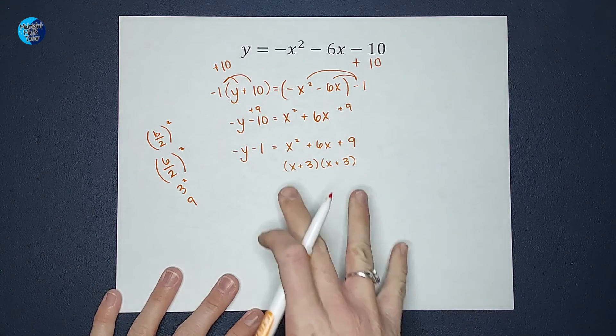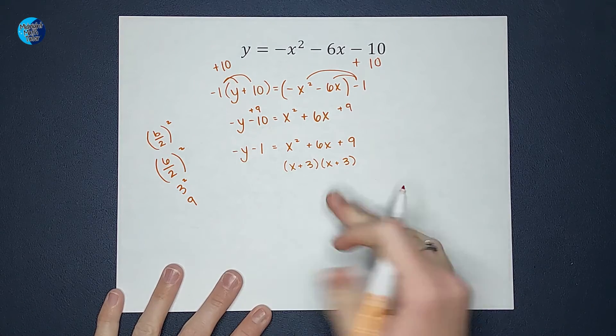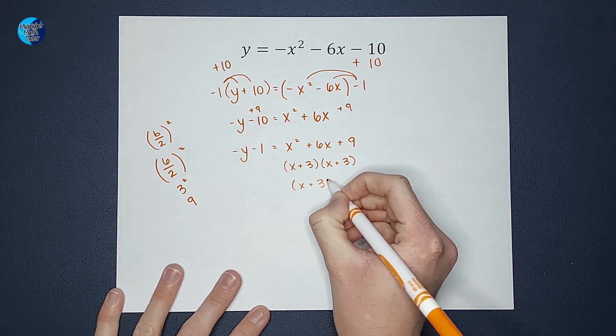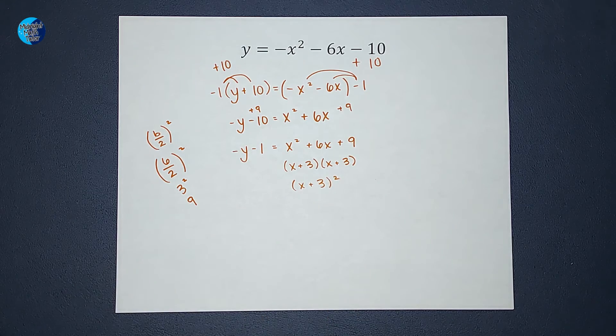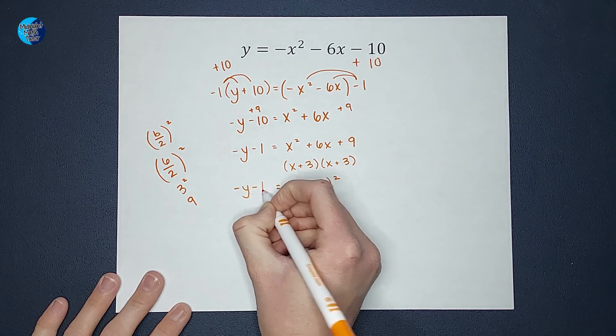If you didn't remember that and you wanted to factor the old-fashioned way, go for it. So now I can also write that as x plus 3 squared, which is what I wanted. But we can't forget this side over here. We're still equal to negative y minus 1.